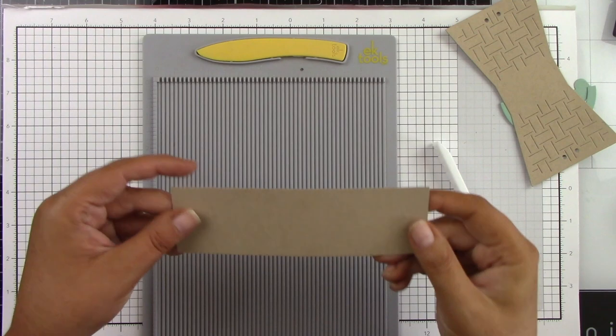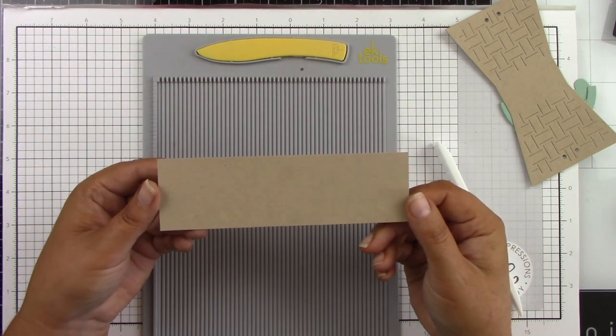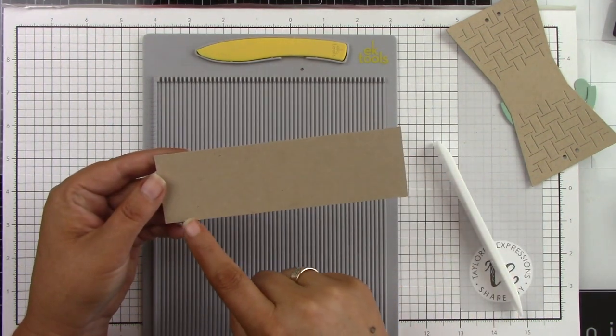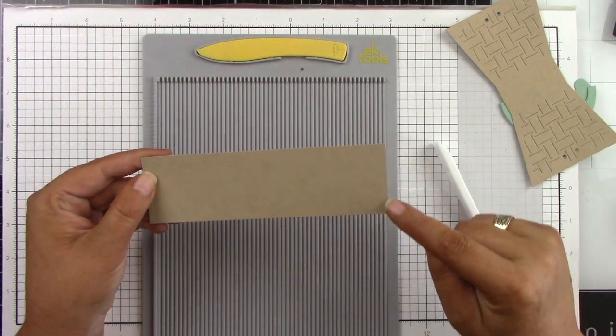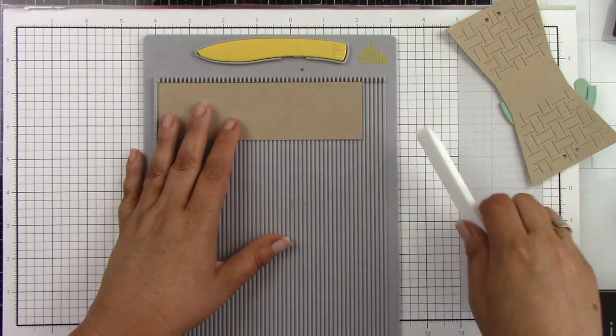Now I have this piece right here. This is a 6 inch by 1 and 3 quarters inch piece of toffee cardstock. This is going to make the little part inside the basket that's going to hold the treats.